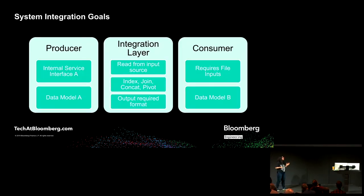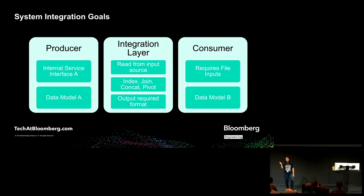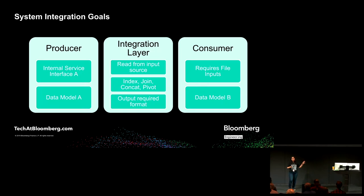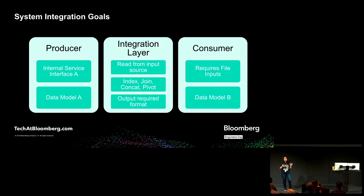We built a structure where we had our producer with its own data model and our consumer on the other side with its own data model. The consumer's interface required files — data files and also signaling files like a 'done' or 'okay' file. For our modern system, we didn't want to write data to a file just because the legacy consumer required it. We had databases and service interfaces. In order to ensure no interdependence between these systems, we built an integration layer, and this is where we used Python and Pandas.